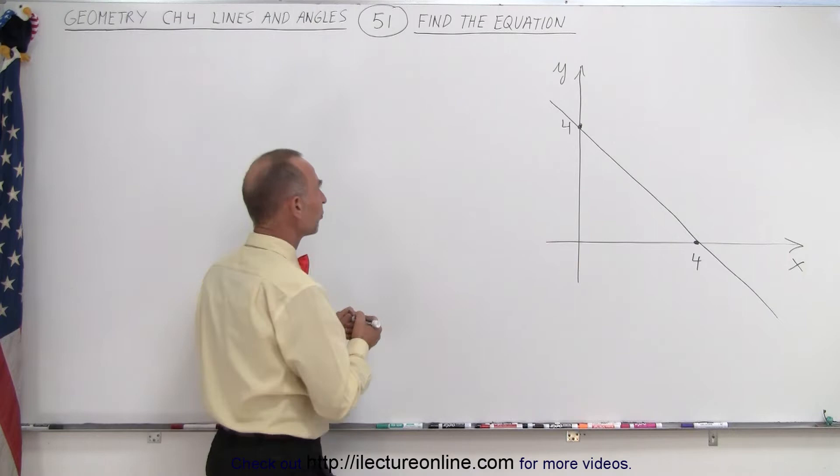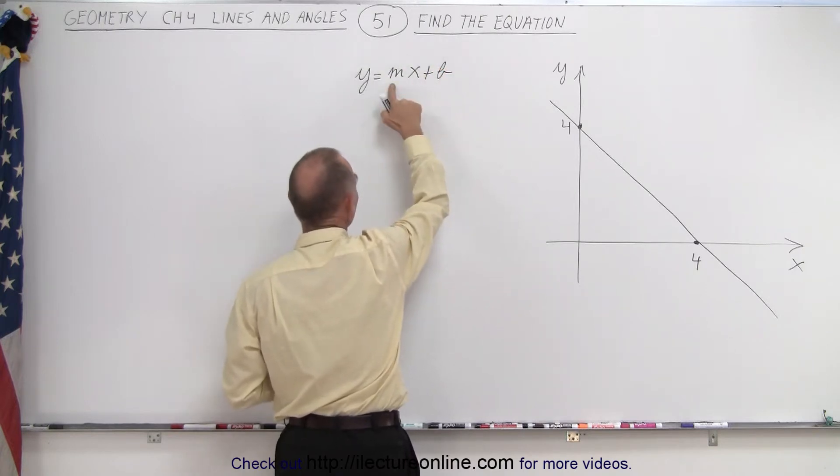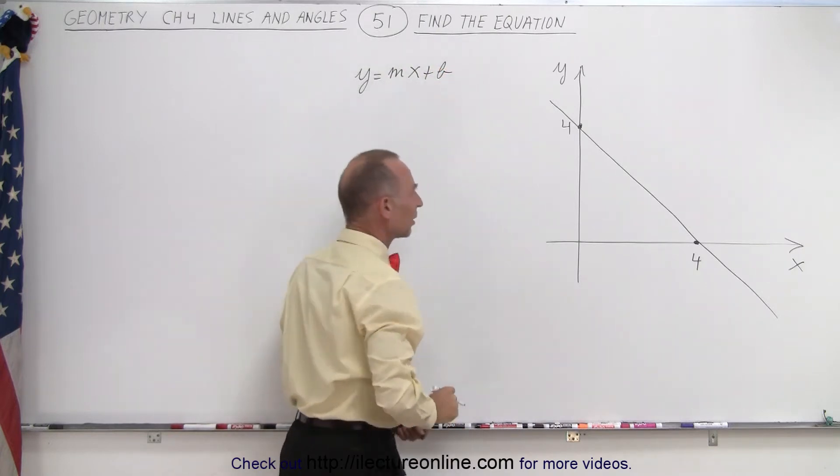We know that the general form of the equation is going to look like this: y equals mx plus b, where m is the slope and b is the y-intercept.